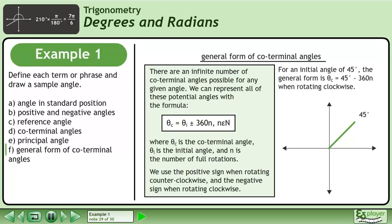For an initial angle of 45 degrees, the general form is θc equals 45 degrees minus 360n when rotating clockwise. The animation shows the first four negative coterminal angles.